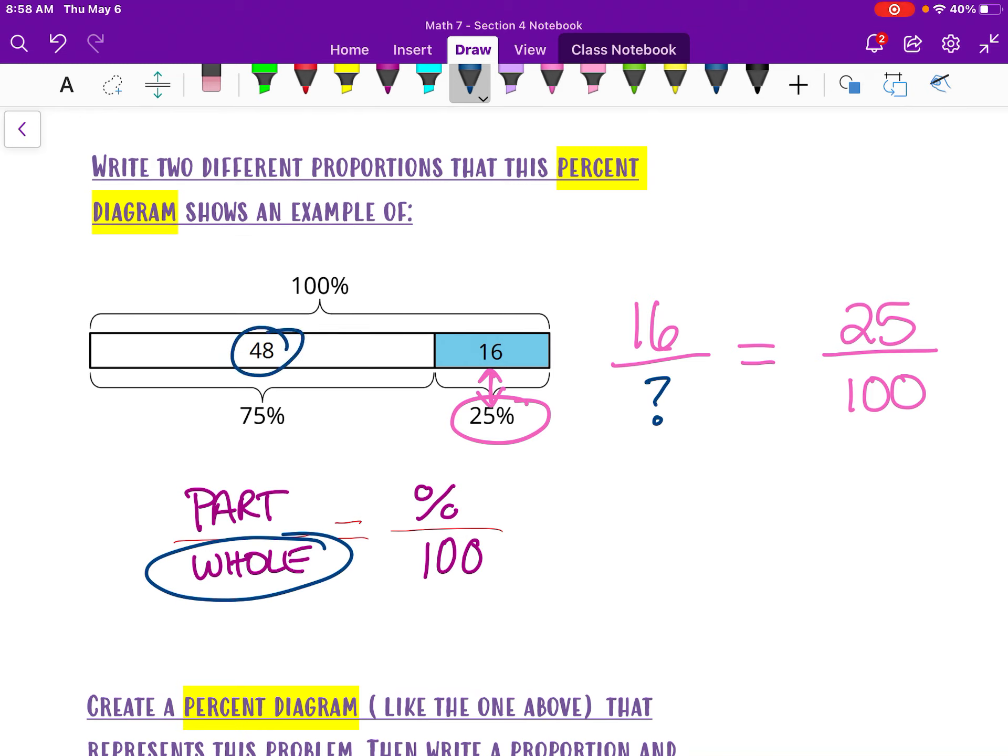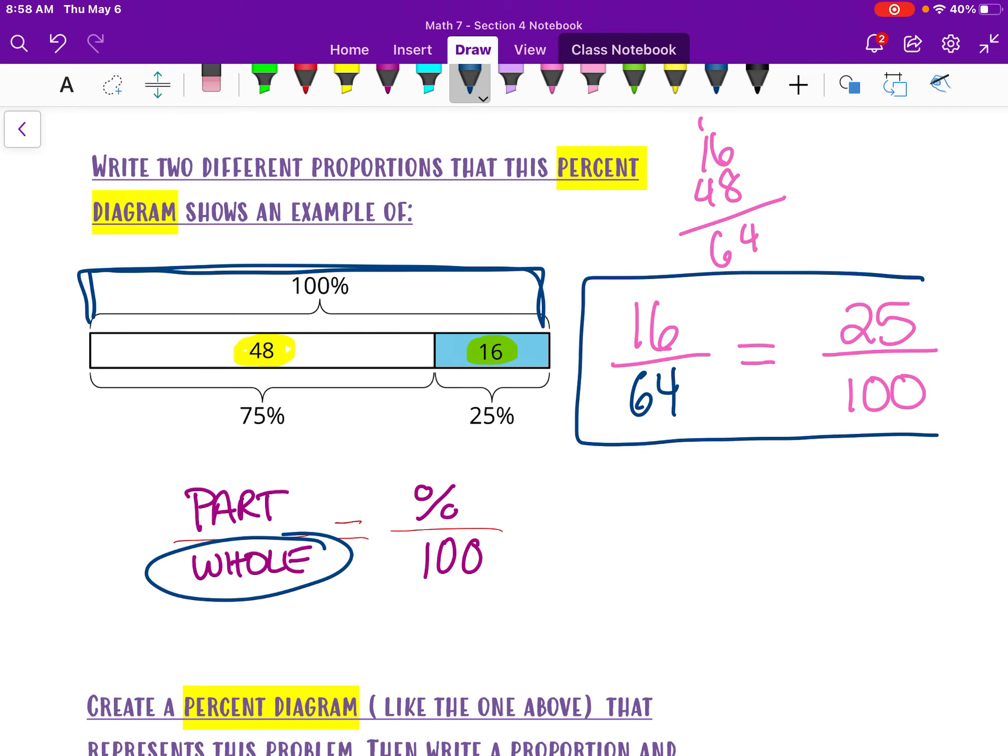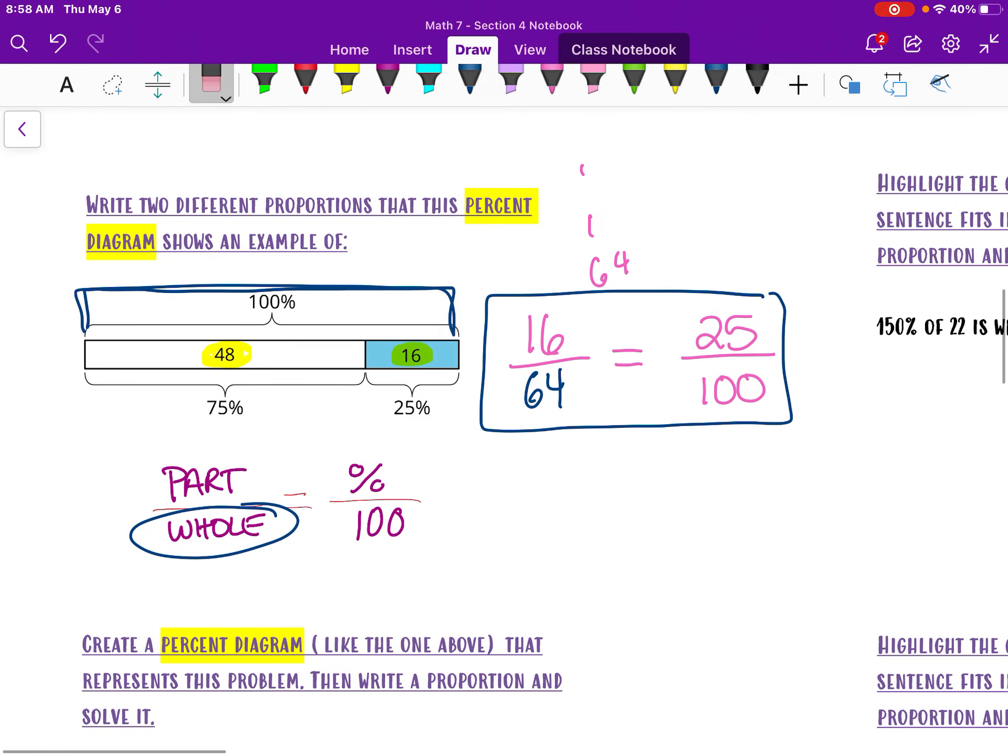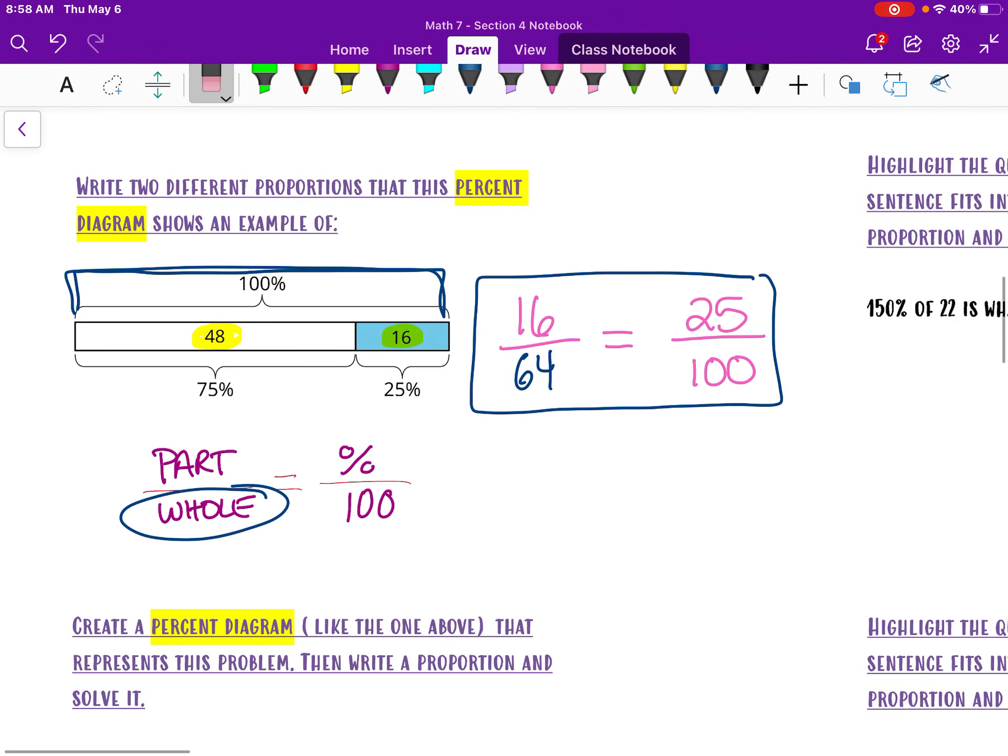And 48, guys, is not the whole because the whole is 100%. So what do we have to do here? We have to actually put together the 16 and the 48 to see how much total we have. So when we add those together, we actually end up getting 64 for the whole. So here is one proportion that you could set up being shown from this diagram.